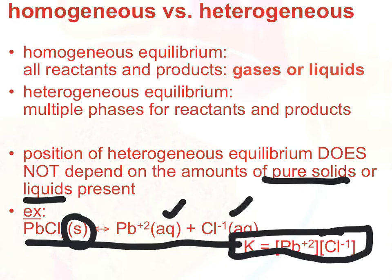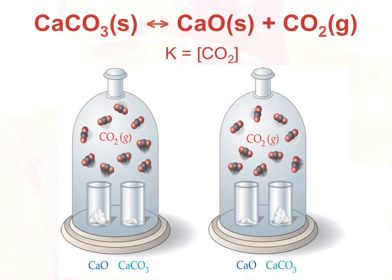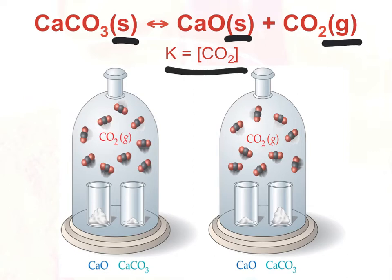In a heterogeneous equilibrium setup, we're going to have either a pure solid or pure liquid present in the equation. Here's another example: calcium carbonate decomposing into calcium oxide and carbon dioxide gas. Notice that I have two solids — one a reactant and one a product — and a gaseous CO2 product. In this case, the only component included in the equilibrium expression is the CO2.